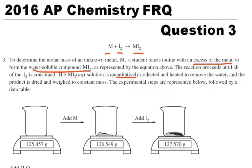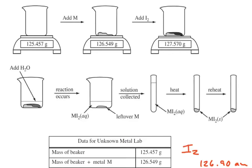The experimental steps are represented below, followed by a data table. We can see we have a beaker, and we're getting the mass of the beaker. We're adding some metal, we're adding some iodine, and then we add water and the reaction occurs. The MI2 is aqueous, it's in the solution. We have some excess metal, and then we heat it up and we just get the MI2 solid in the tube.